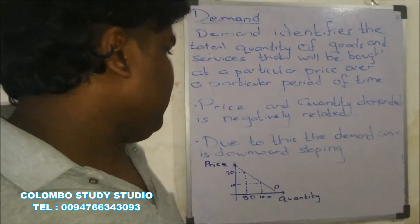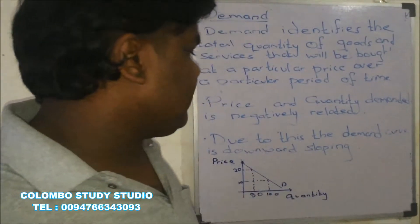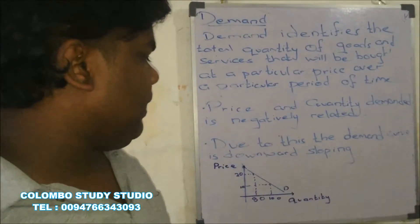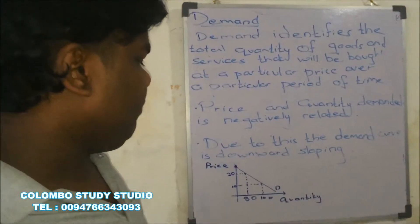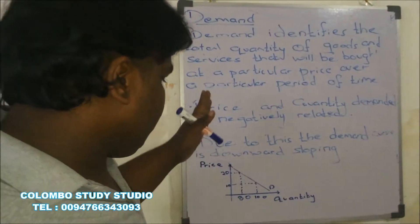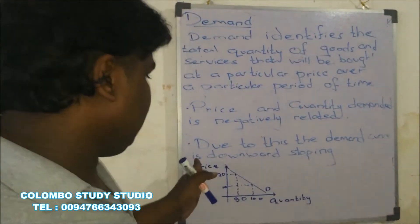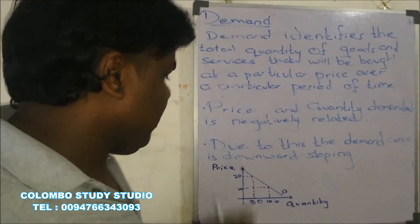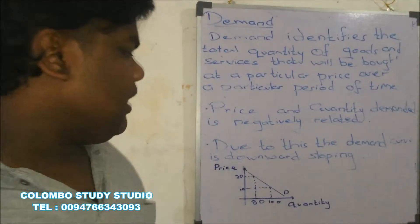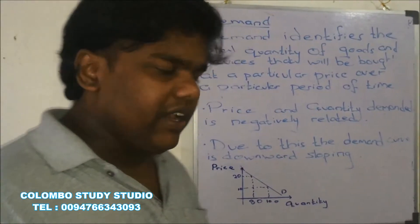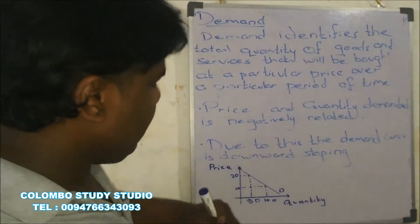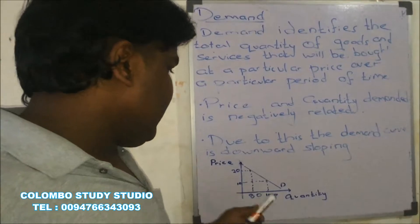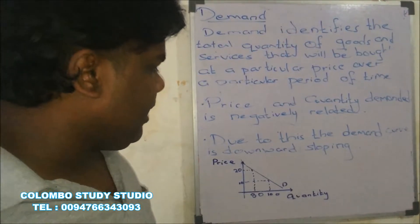Due to this negative relationship, the demand curve has a downward sloping shape. If I put price on the y-axis and quantity on the x-axis and draw a graph, I will identify that the demand curve slopes downward.